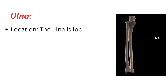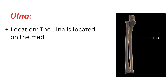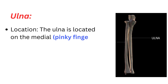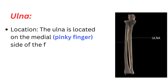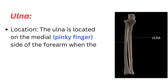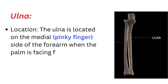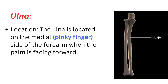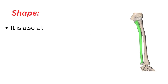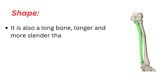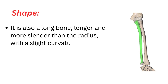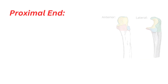Ulna location: the ulna is located on the medial, pinky finger side of the forearm when the palm is facing forward. It is also a long bone, longer and more slender than the radius, with a slight curvature.